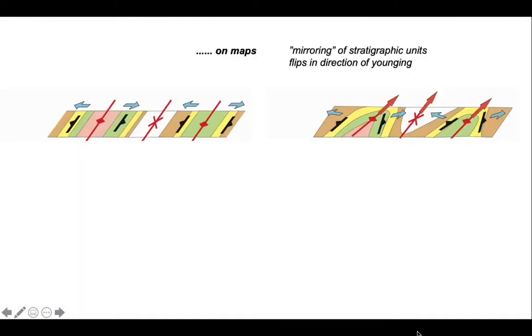So we're going to take this to maps. The key part of recognising folds on maps is this mirroring effect of the stratigraphic units and the direction of younging that flips across the fold axes and the variations in the dip direction of the strata.